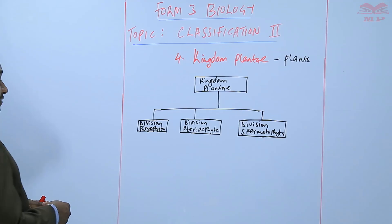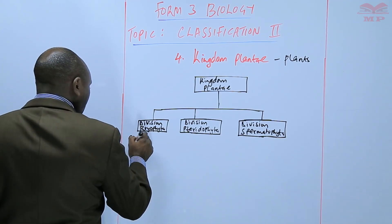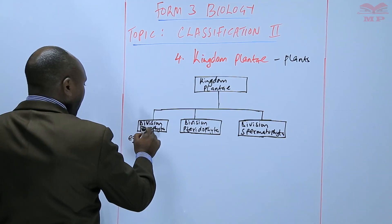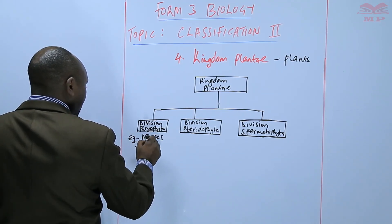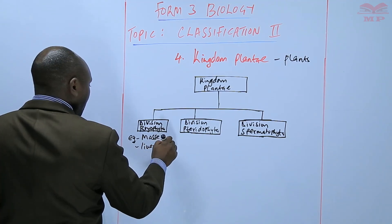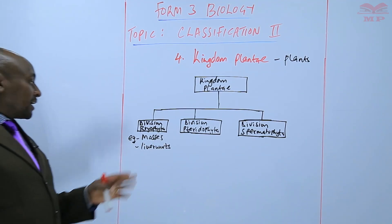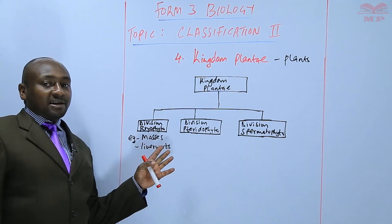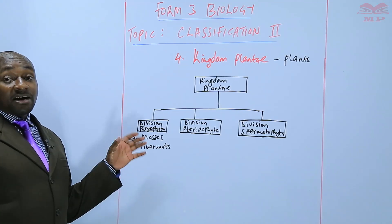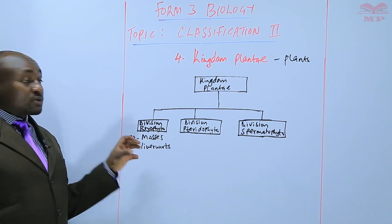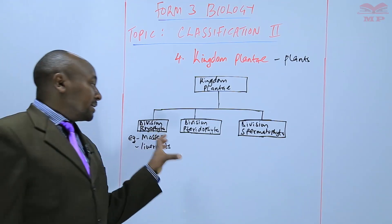In Division Bryophyta, examples include the mosses and the liverworts. Those are the plants found in Division Bryophyta. These plants are not so advanced — they are the least advanced plants. In fact, they lack a vascular system. We shall get into the details about them individually.